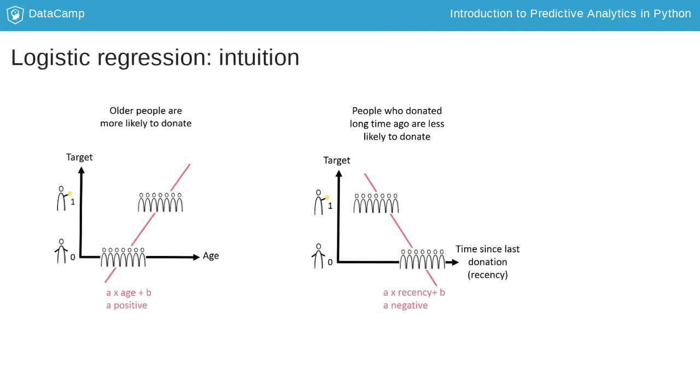Recall from the coding exercises that elderly people are more likely to donate. Indeed, if we plot the target in function of the age for all donors in the population, we see that a 1 occurs more to the right where the older donors are.